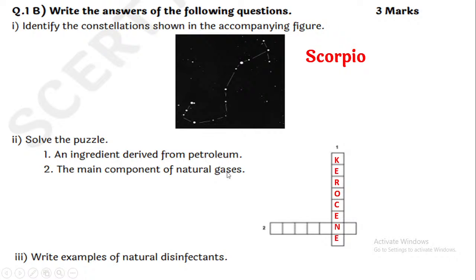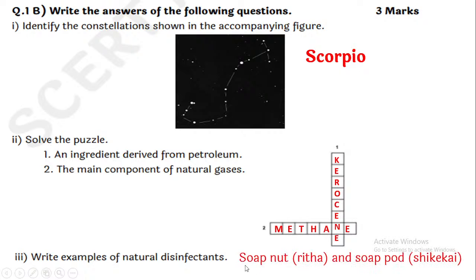The main component of natural gas is methane, CH4. Now, write examples of natural disinfectants: soap nut, that is Reetha in Marathi, and soap pod, that is Shikai.